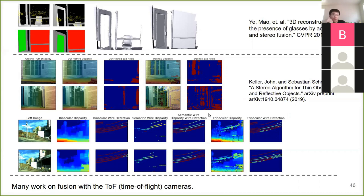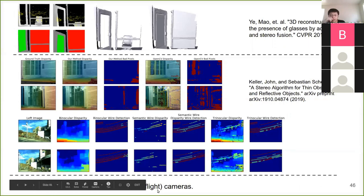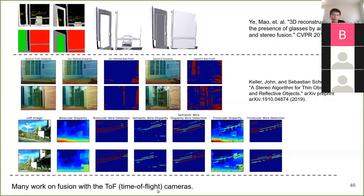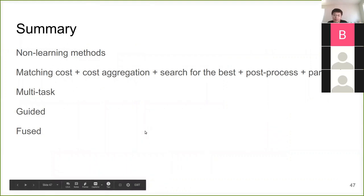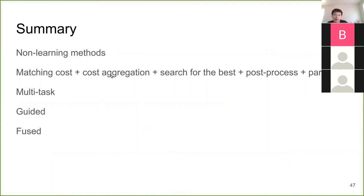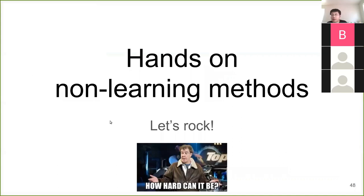Besides sensor fusion or guided methods, there's a bunch of work on fusion between cameras and TOF cameras — essentially doing a similar thing of fusing sparse measurements like LiDAR. A simple summary: all these non-learning methods are based on SGM, requiring matching cost computation, aggregation, and other steps. We'll try some hands-on experiments with these non-learning methods, and then discuss learning methods.